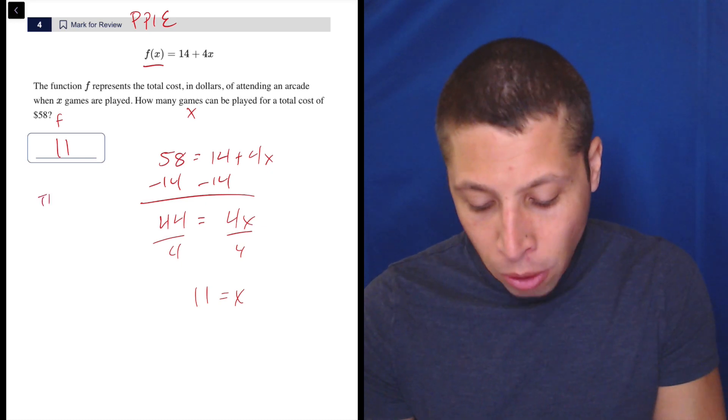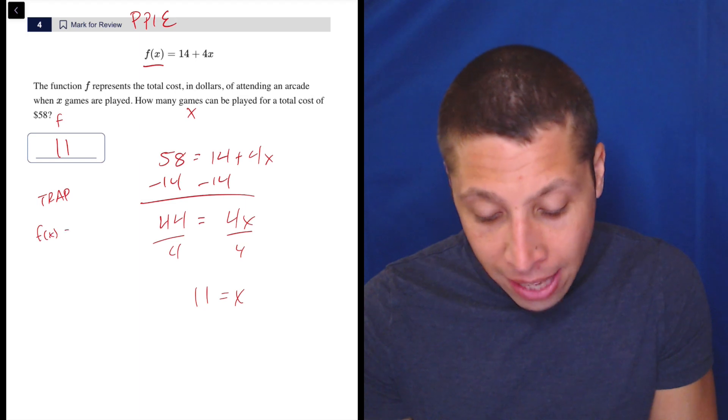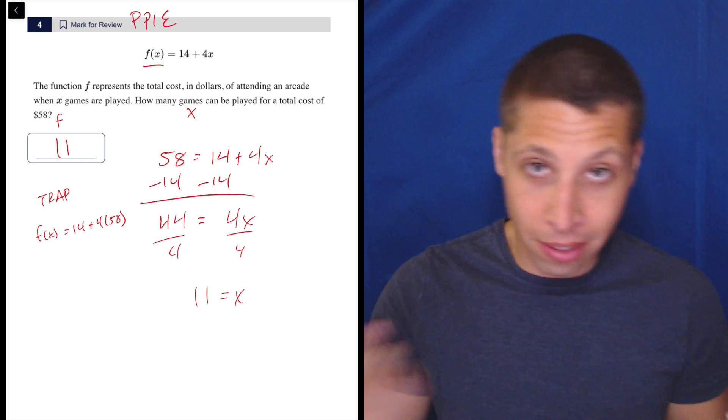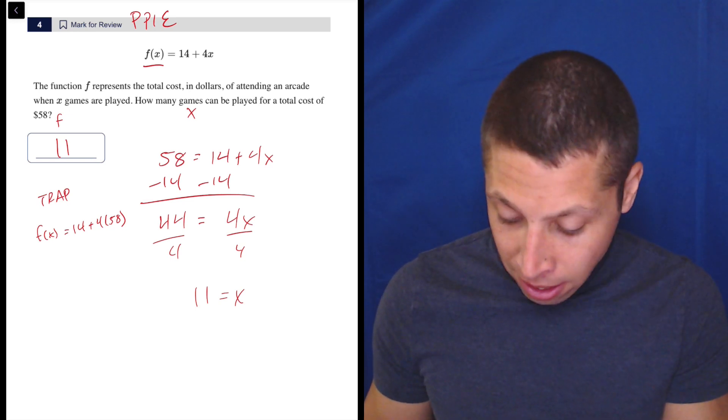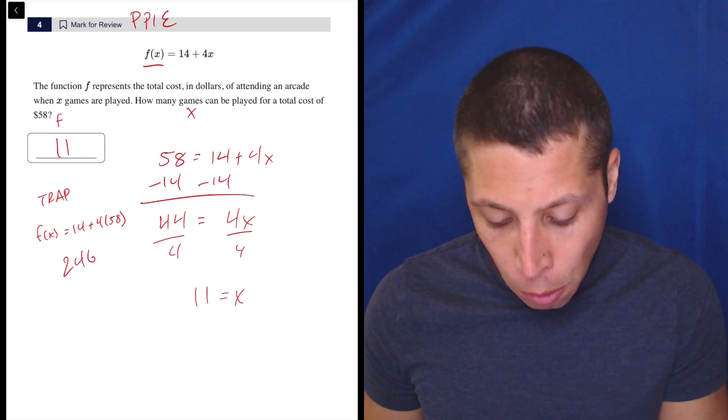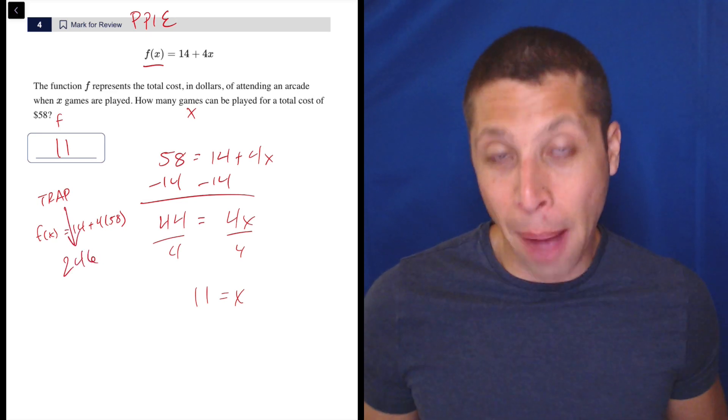So that's the answer. But the trap answer is what you would get if you put the x as 58, right? So if you did this, you're going to get some huge number. Let's see what it is, just so you can know if you did that. 4 times 58 plus 14 is 246. So if you put 246, that's the trap, okay?